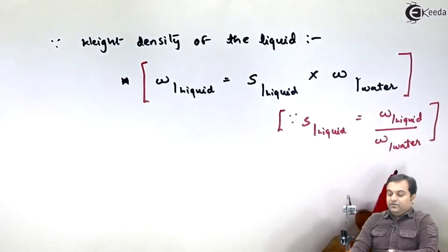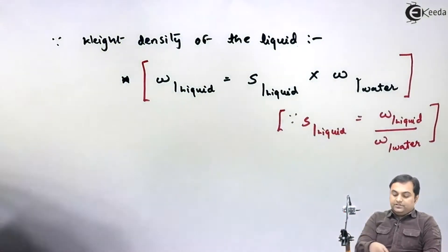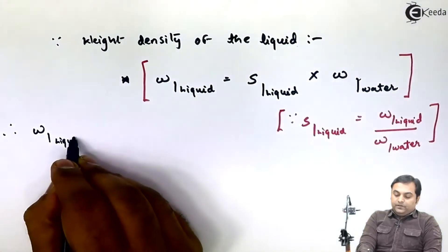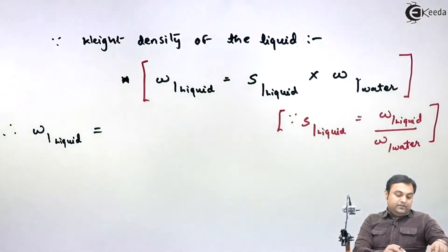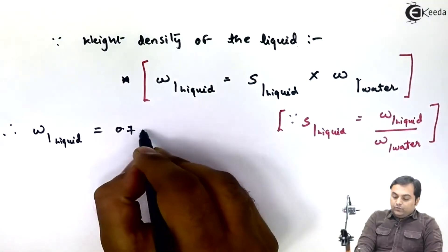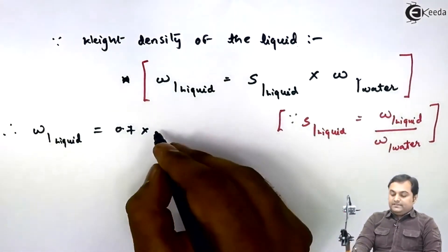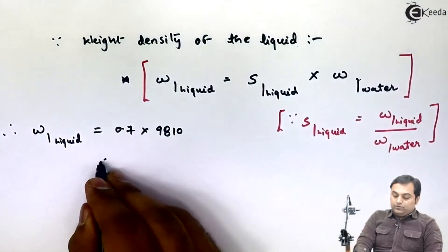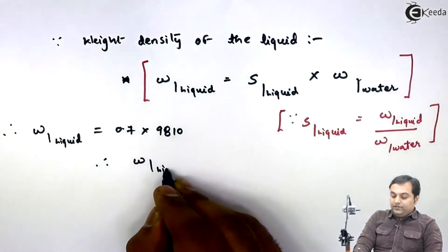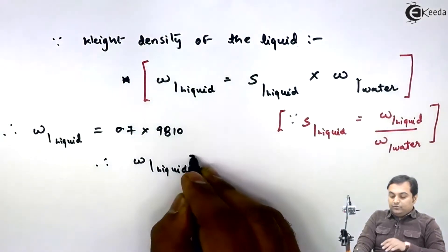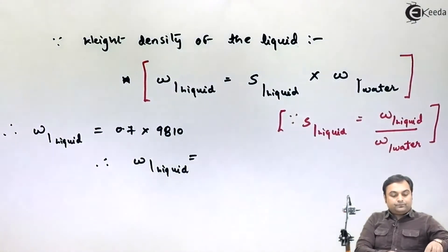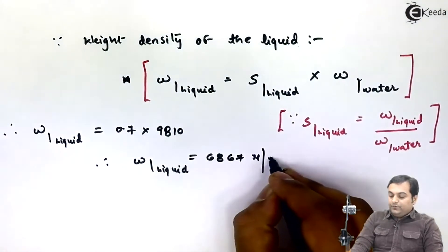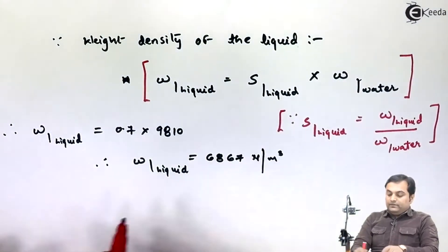From this relation, the weight density of the liquid equals specific gravity — given as 0.7 — into the weight density of water, taken as 9810 newton per meter cube. So the specific weight of the liquid comes out to be 6867 newton per meter cube. This is my second answer.